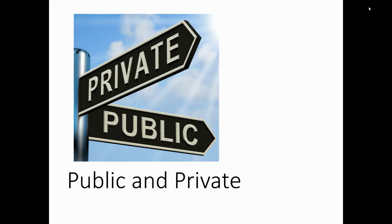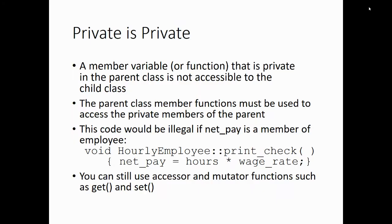Let's look more in depth at public and private. Private is private — remember from CS150, we told you to make your member variables private and your member functions public. Parent class member functions can definitely be used to access private members of the parent through getters and setters, but you can't directly access them outside of the class. So code like net_pay = hours * wage_rate would be illegal if net_pay is a private member of employee. The subclass can't do that for its parent either, but you can still use accessor and mutator functions to accomplish that.